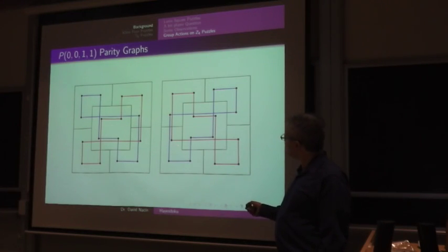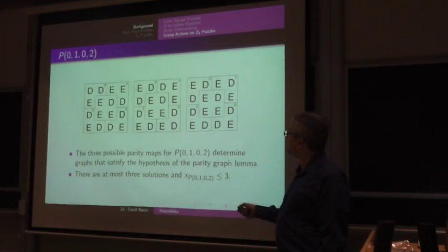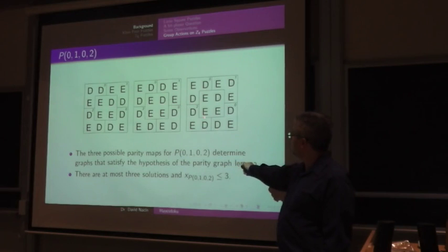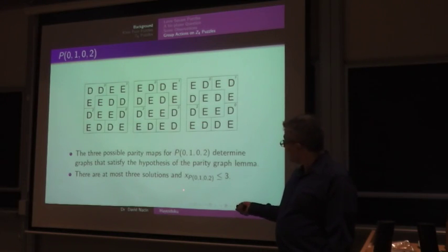So therefore, each of these can provide at most one solution, so I get a bound of two. Now for this type, for this orbit, I'll pick P0102. You can see there's only three ways we can complete this. It doesn't take much work. It's very quick to determine the parity maps.